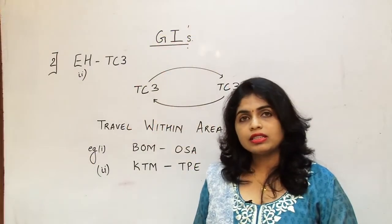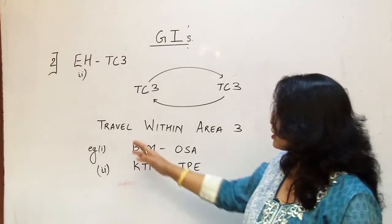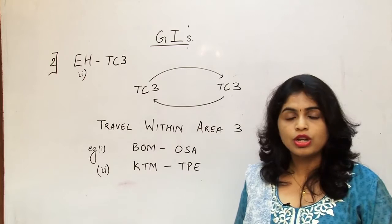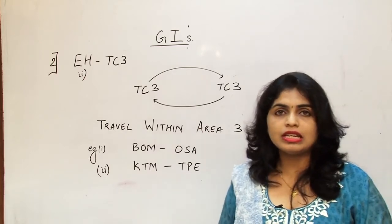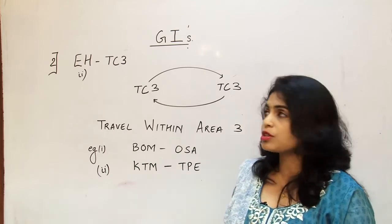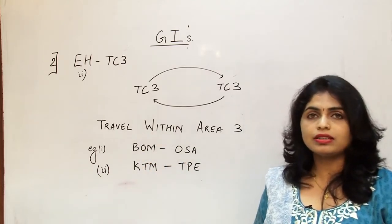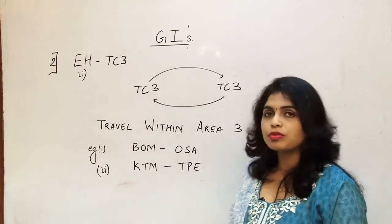Now there is Eastern Hemisphere again which comes when travel is within area 3. This is the second time when EH comes into picture, we can call this as case 2 of EH, that is Eastern Hemisphere. If the travel is within area 3, we say that it is Eastern Hemisphere. These are the examples over here.